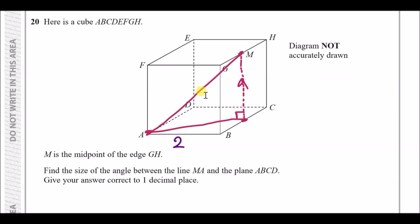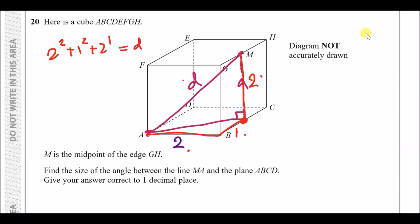We need to work out the length of diagonal D using 3D Pythagoras. We need the length from A to B, B to the midpoint, and the midpoint up to M. We know this length is two and this tiny length — half the distance — must be one. So: two squared plus one squared plus two squared equals D squared, which gives nine, so D equals three.